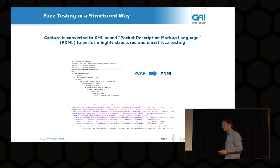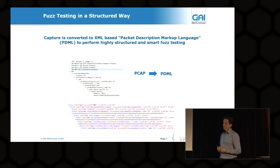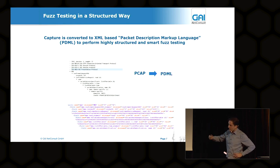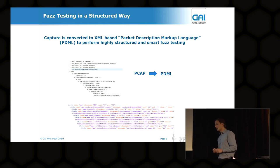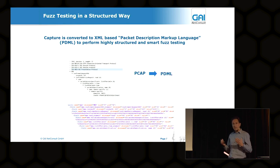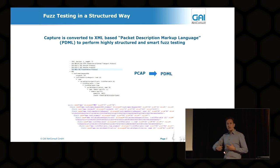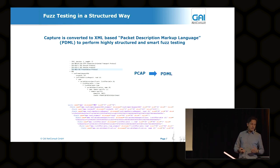Our fuzzer accepts fuzzing routines as plugins, so we can extend it in our daily audits and add more fuzzing routines. We apply different fuzzing routines to different protocol fields to form our fuzzing packet, and in the end the packet is sent out to the network after replaying the traffic. That's essentially what the fuzzer does.